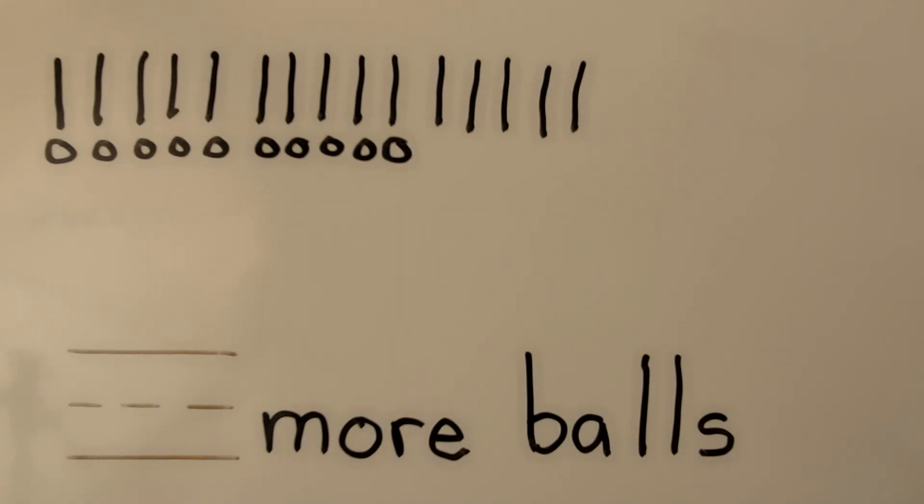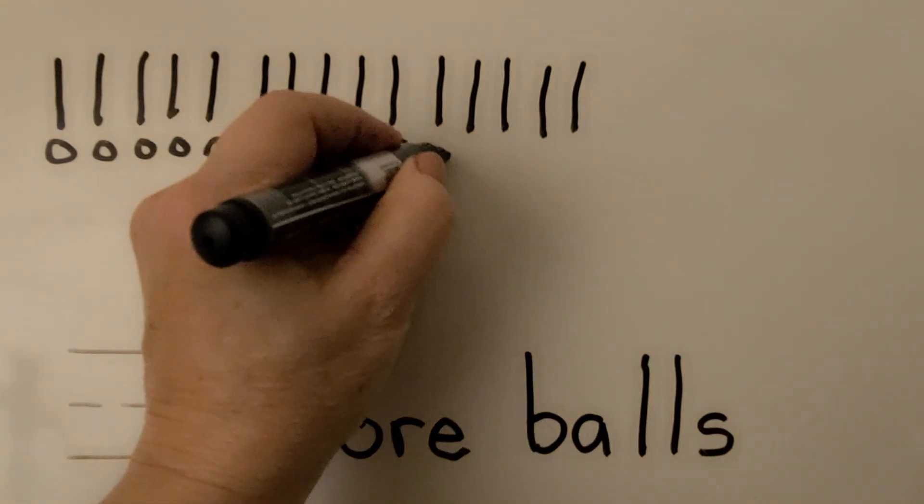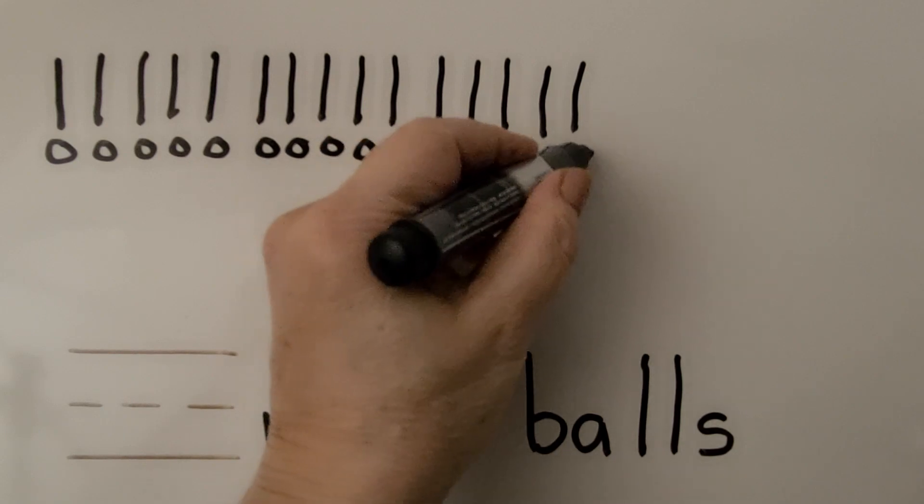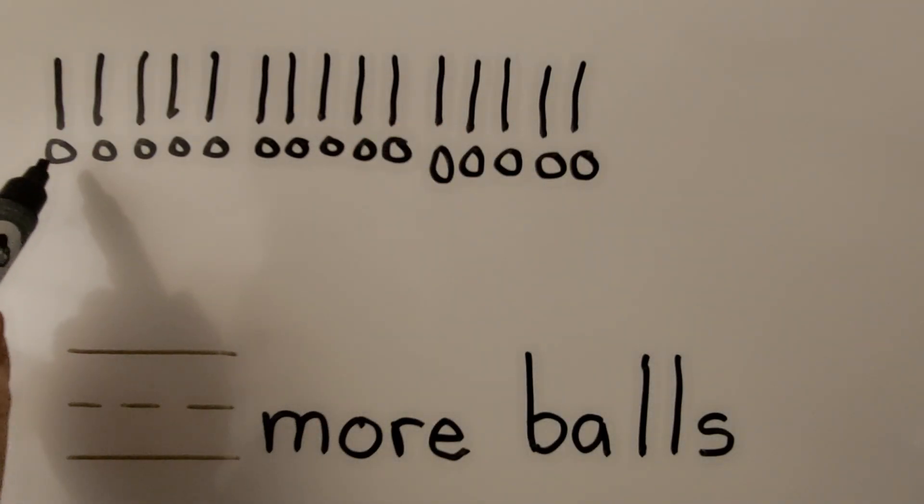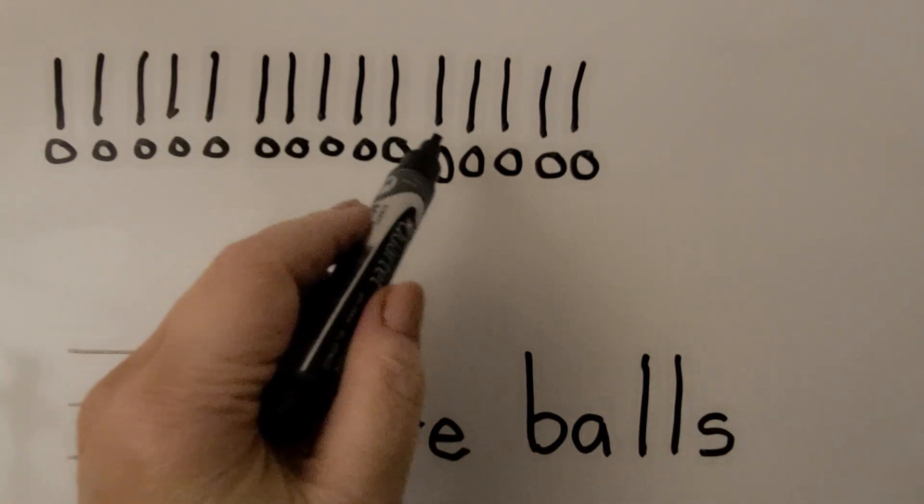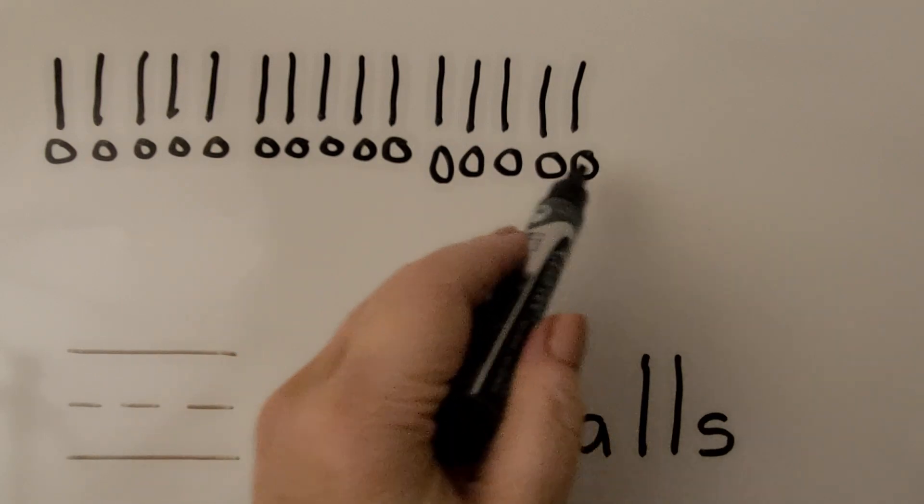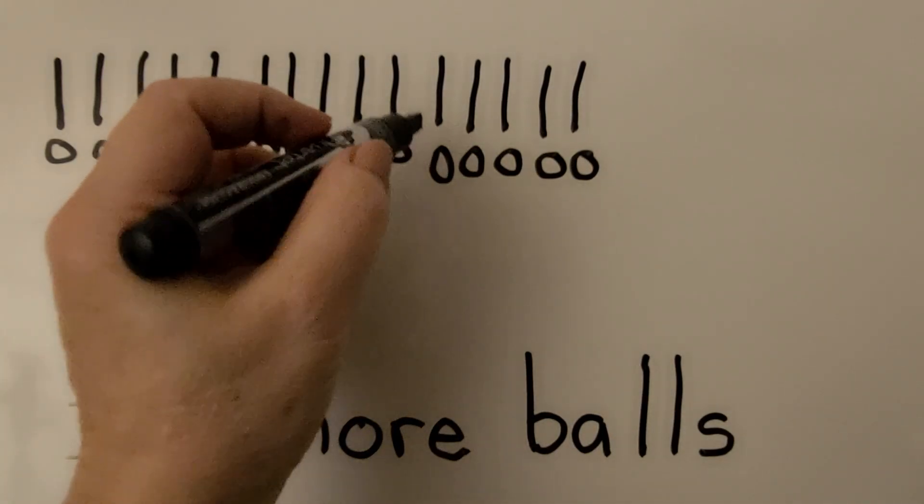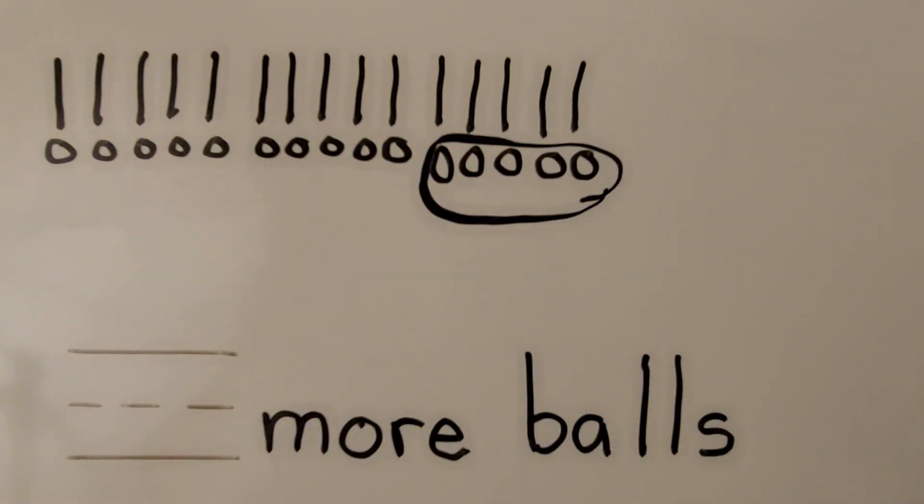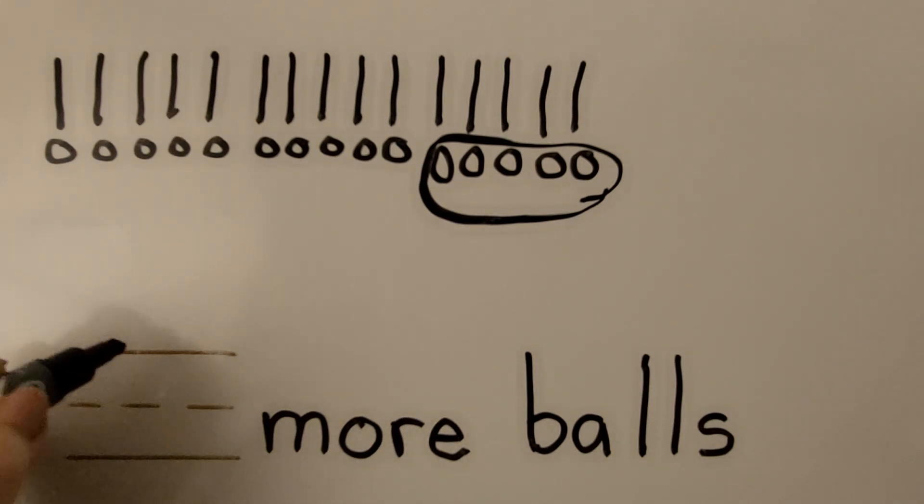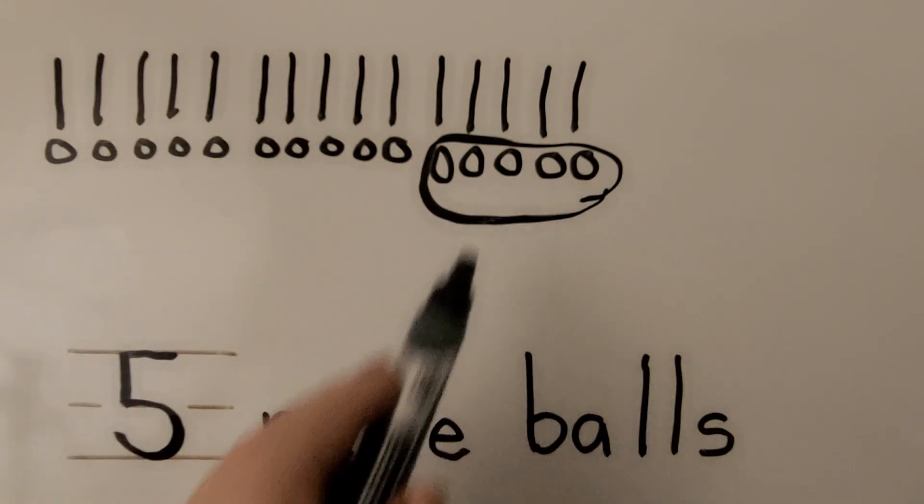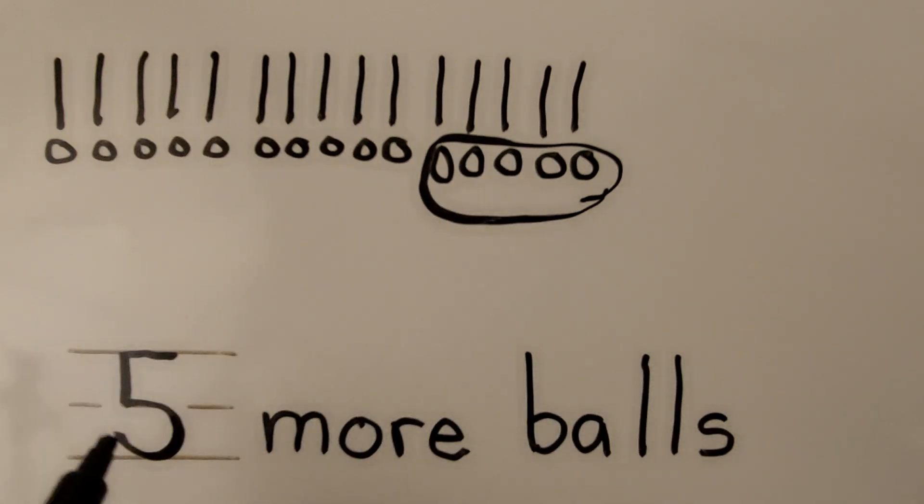We need to draw 5 more circles so each child would have a ball. We draw circles, counting through 15 total. We needed to draw 5 of them so that they would all have a ball. We needed 5 more balls. We needed to draw 5 more. 10 and 5 more would be 15 in all. We needed 5.